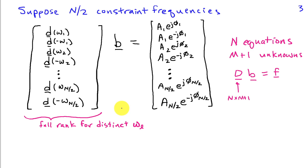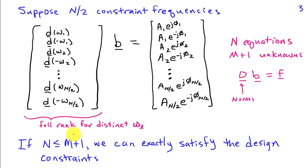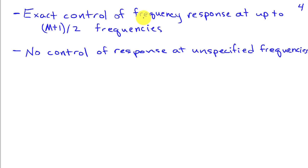It turns out you can show that this matrix will be full rank as long as the frequencies, the ω_L's, are distinct, and it wouldn't make sense to use the same frequency twice. Since this matrix D is full rank, we know that if N, the number of constraints, is less than or equal to M+1, the number of elements in b, then we can exactly satisfy this system of linear equations. That is, we can find an FIR filter that will have the specified response at those frequencies exactly. It's a really nice property to have, although there are some limitations in terms of what we can do with this.